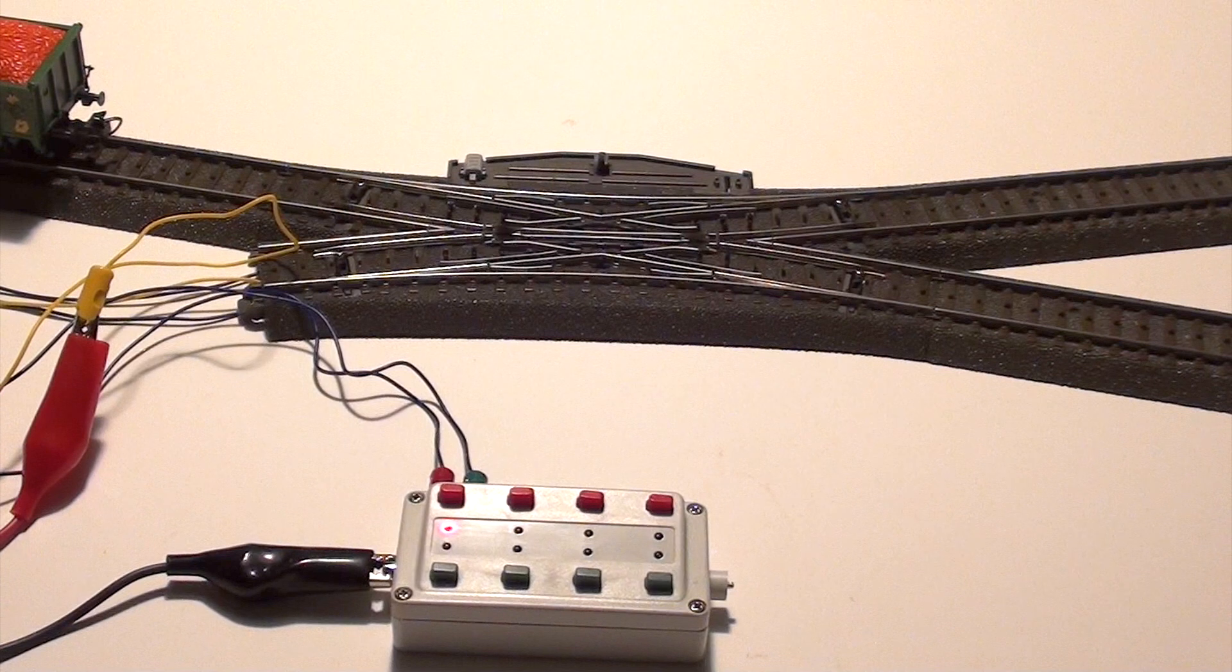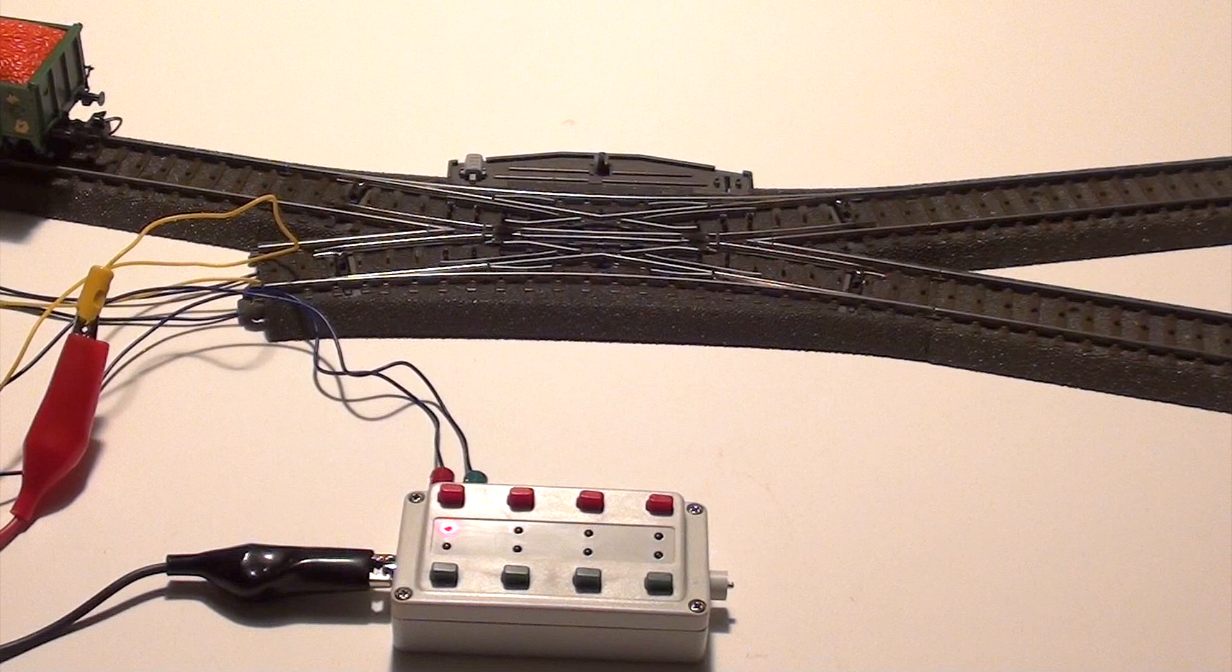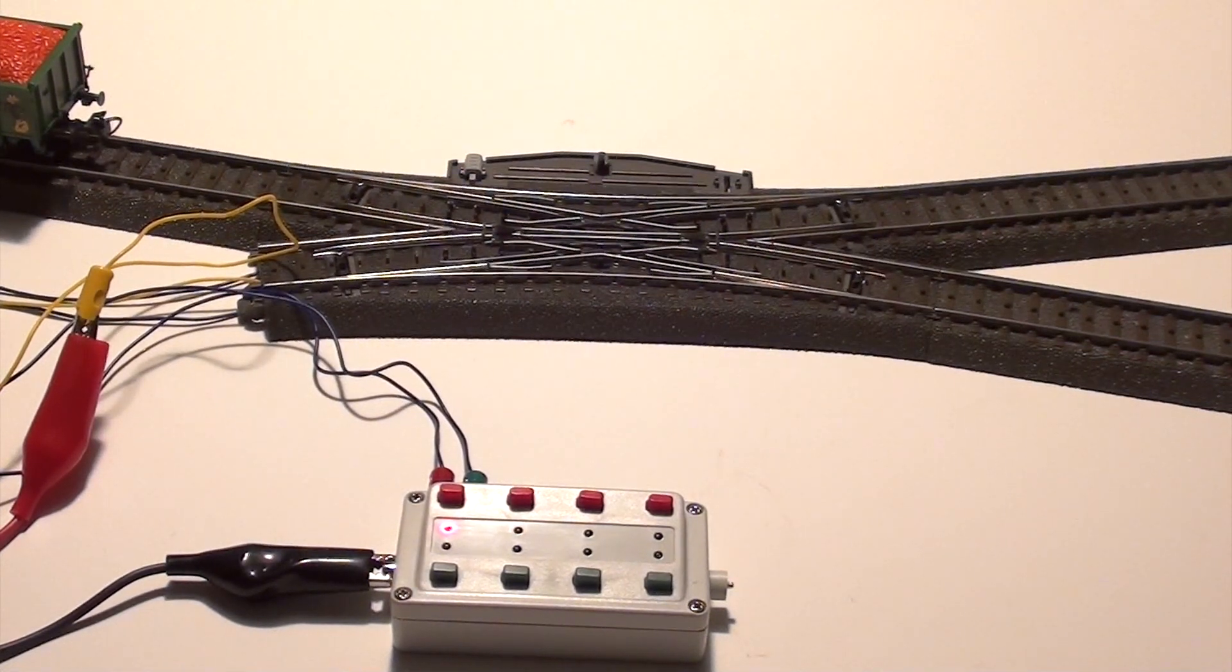Alright, here I made the connections to the control box. And you see that big black and the big red alligator clips, those are just the transformer leads. Here in the studio I did not have the regular plugs, so this is how I got the power from the transformer.